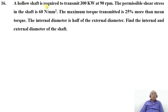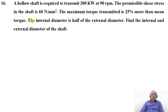A hollow shaft is required to transmit 300 kW at 90 RPM. The permissible shear stress in the shaft is 60 N/mm². The maximum torque transmitted is 25% more than mean torque. The internal diameter is half of the external diameter. Find the internal and external diameter of the shaft.